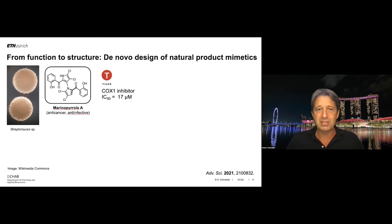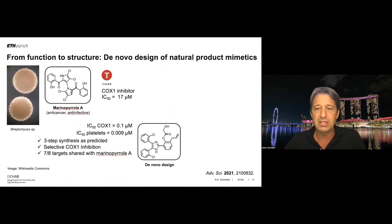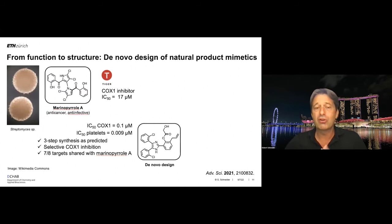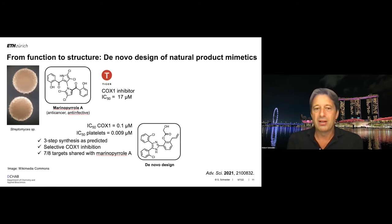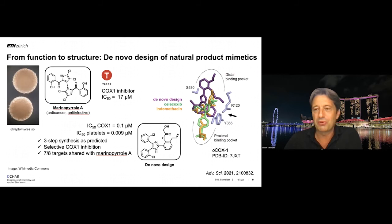More recently, we looked at Marineosin A — an anti-infective and anti-cancer compound — and identified its first known target: cyclooxygenase-1, a relatively weak inhibitor. Using our de novo design tool, the top-scoring computer-generated molecule could be synthesized in three steps, compared to the nine-step synthesis of Marineosin A. It is a selective and highly potent COX-1 inhibitor — the most selective COX-1 inhibitor known to date — and inherited seven out of the predicted targets of Marineosin A.